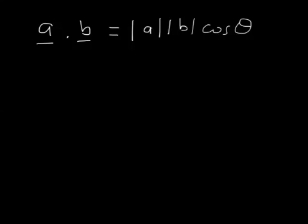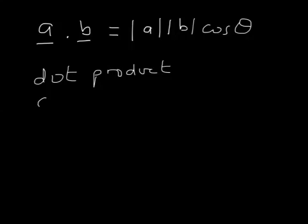We could decide to define multiplying vectors in other ways, and there are in fact other ways, although not within the A-level math syllabus. In the A-level further math syllabus, we look at the cross product, but this is called the dot product — there's a dot there — sometimes called the scalar product.